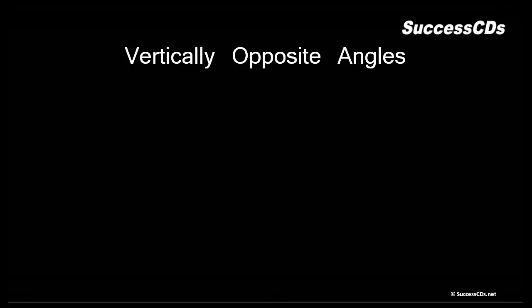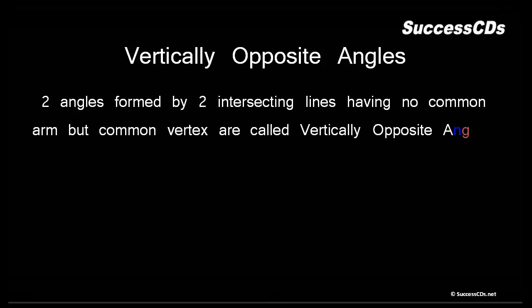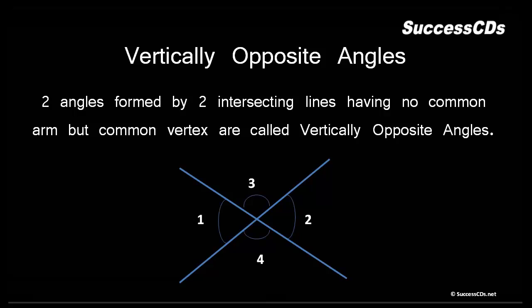Next we move onto vertically opposite angles. The two angles formed by two intersecting lines having no common arm but a common vertex are called vertically opposite angles. Two lines are intersecting at a common vertex but don't have a common arm. Angle 1 equals angle 2, and angle 3 equals angle 4. So the pairs of vertically opposite angles are: 1 and 2, and 3 and 4.